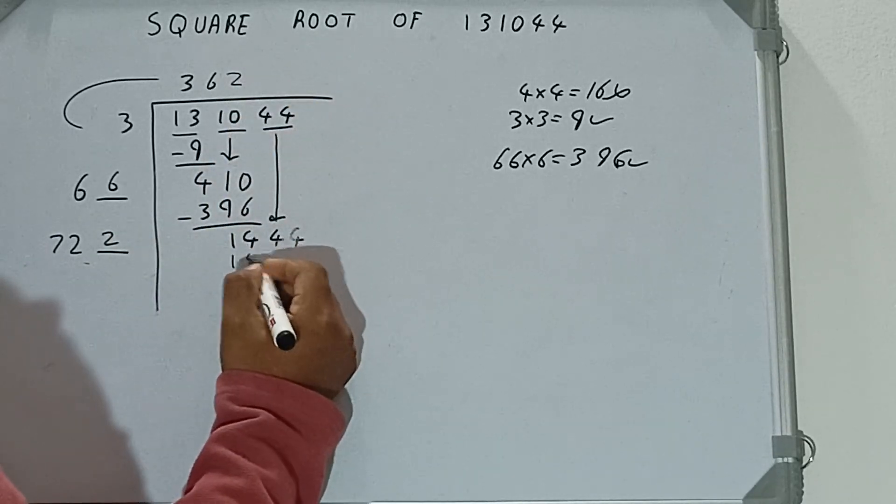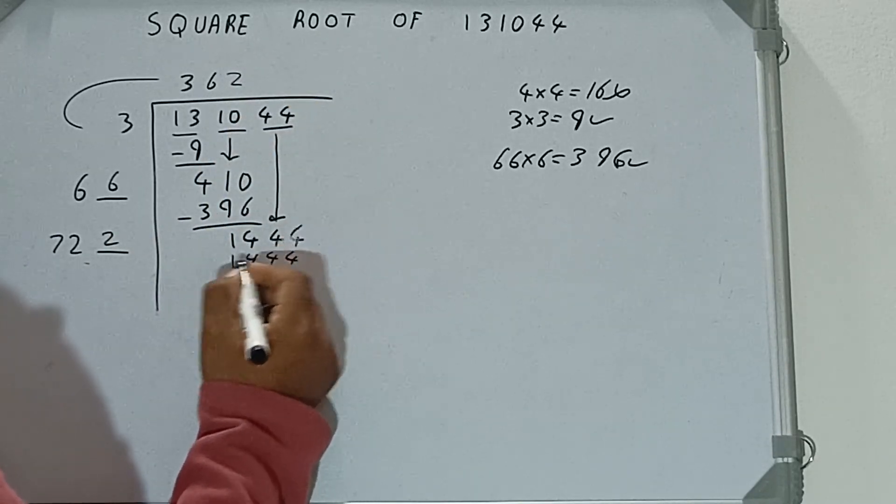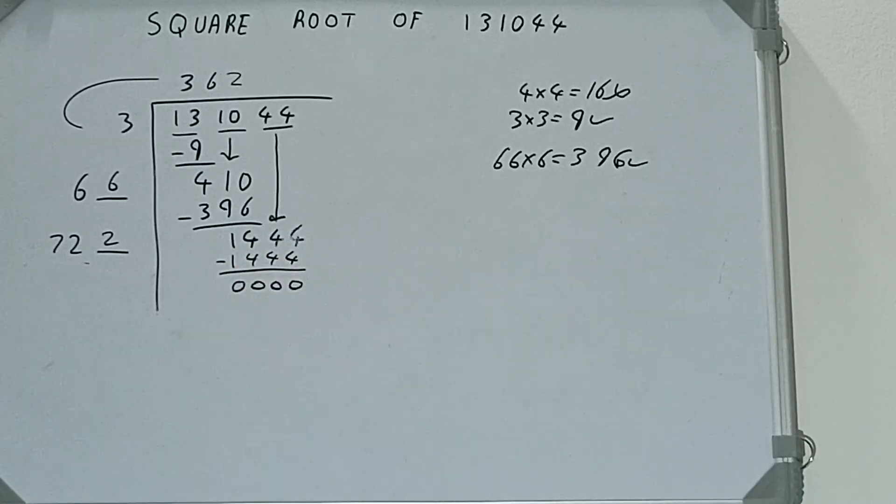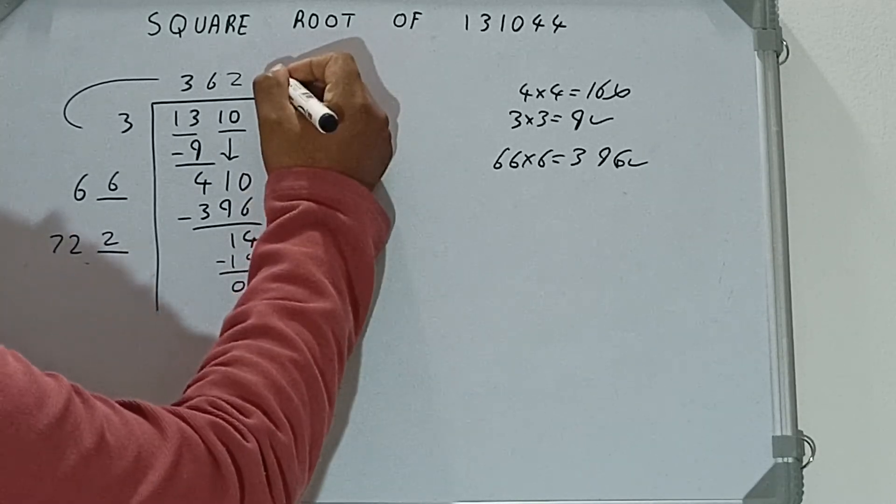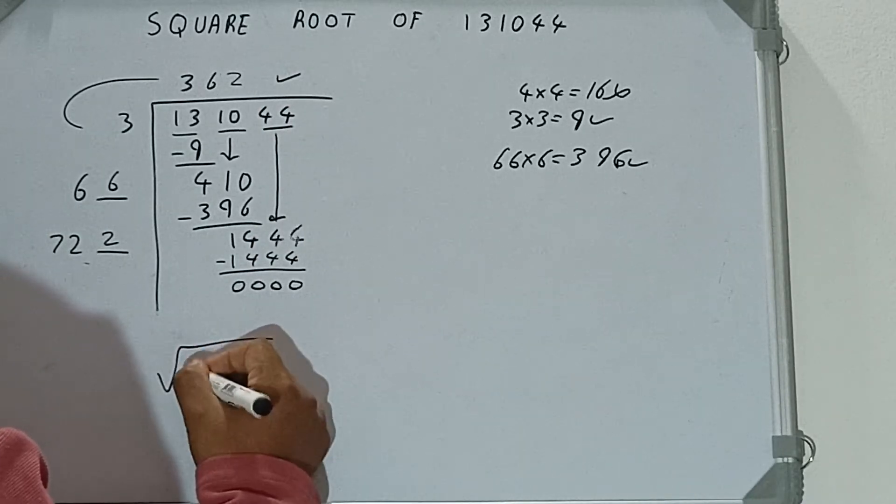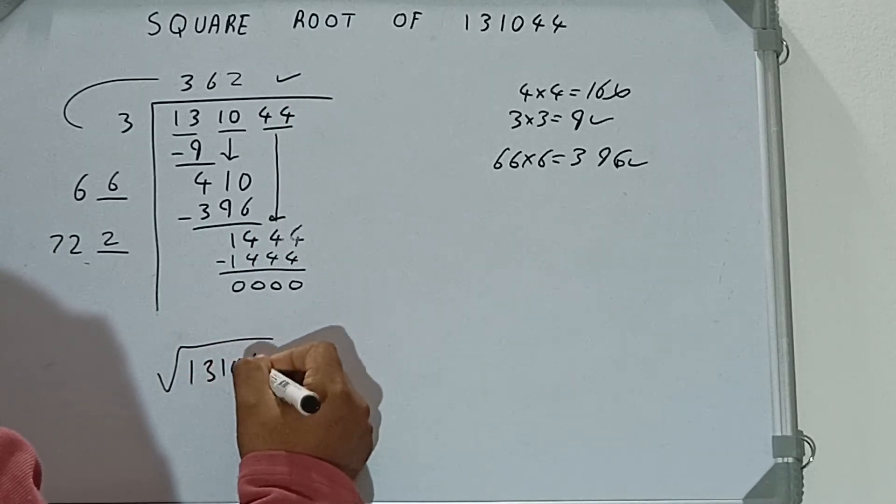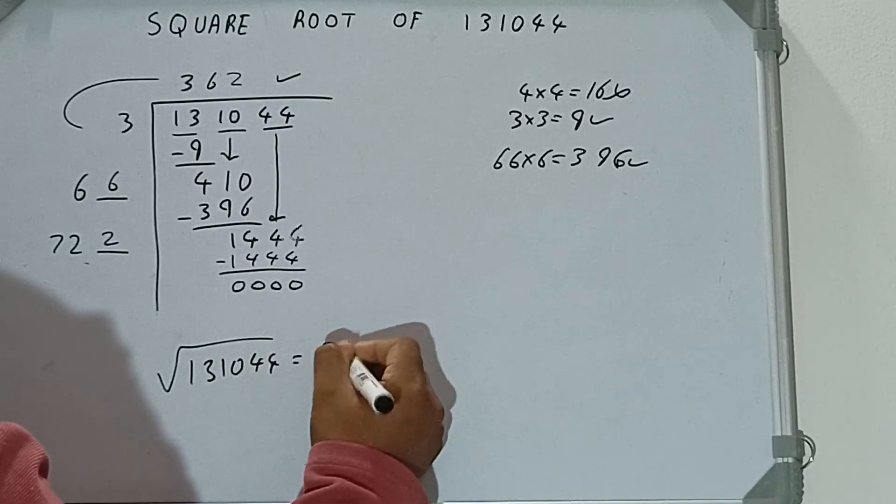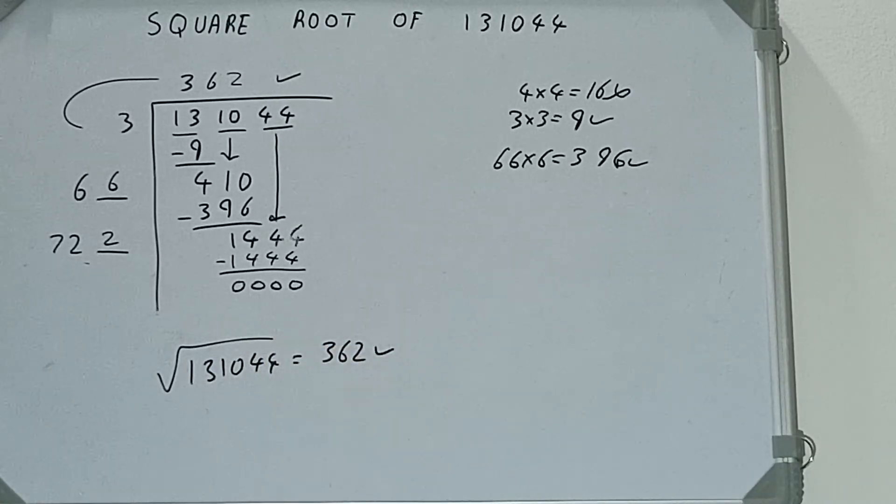Will be getting 144, subtract 0 will be left. Once we get 0, the answer will be in the question—that is 362. So square root of 131044 will be 362. That's it.